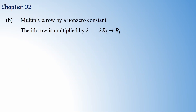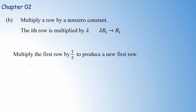The next row operation is multiplying a row by a non-zero constant. For example, if you consider the i-th row, you can multiply it by a non-zero constant — remember, it must be a non-zero constant. You will then get a new i-th row. For example, suppose we multiply the first row by one-half; in the notation, one-half times R1 becomes the new R1.